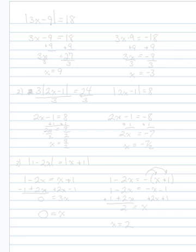Our first problem: we have the absolute value of 3x minus 9 equals 18. One way of handling equations with absolute values is to turn it into two equations without an absolute value. Because by definition,